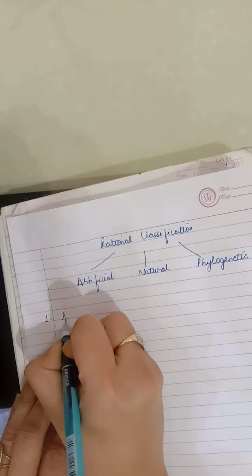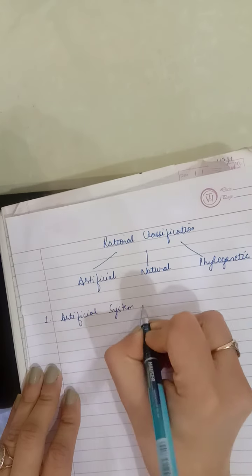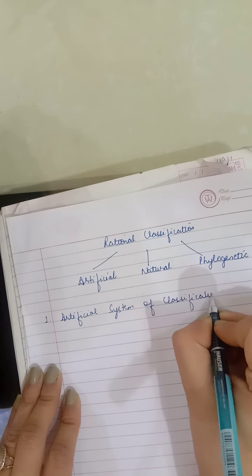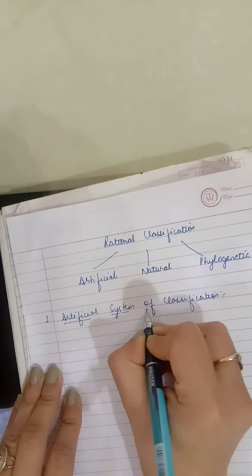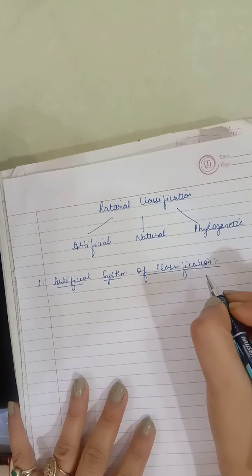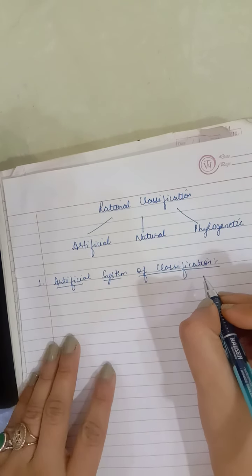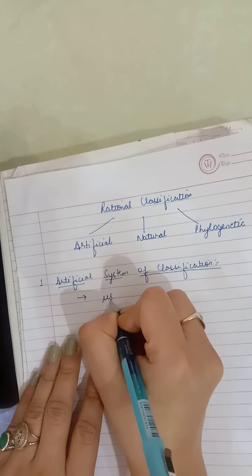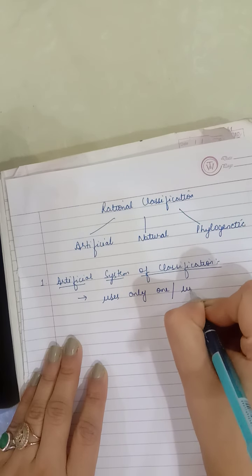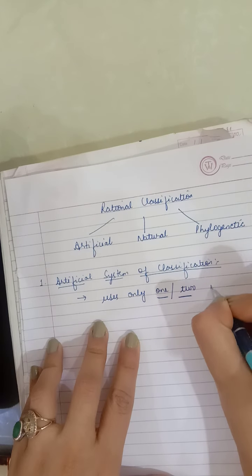Now we will discuss the artificial system of classification first. As we know, it is a type of rational classification, so it involves morphology — which we call the study of external characters. But students, it uses only one or two morphological characters for grouping.